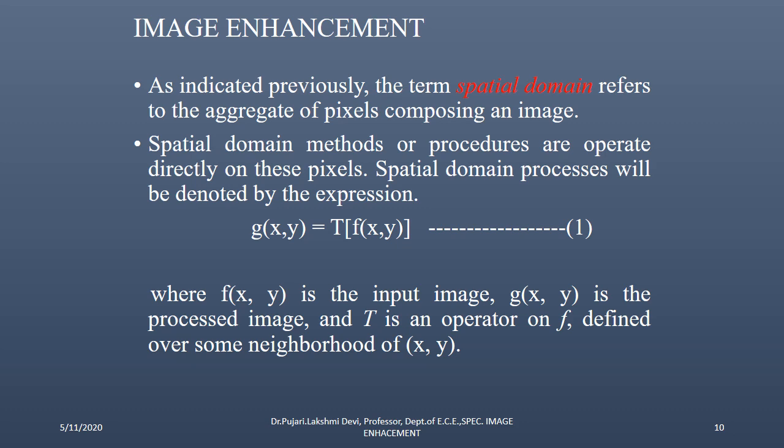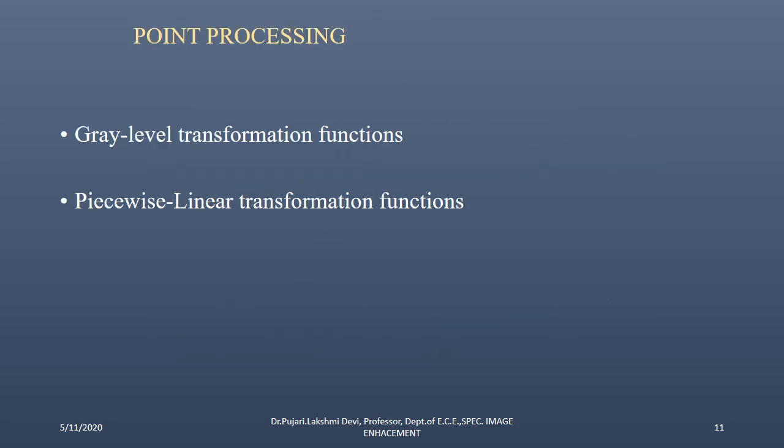The minimum size of the sub-image, filter, kernel, or window is 3×3. In a 3×3 sub-image, we can easily locate the center pixel, which is the 5th pixel out of 9. Whenever we want to change the center pixel value based on its neighboring cells, we perform masking. Under point processing, we have gray level transformation functions and piecewise linear transformation functions, which will be covered in the next video.